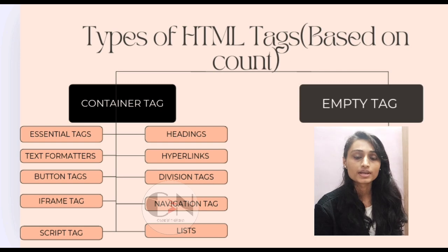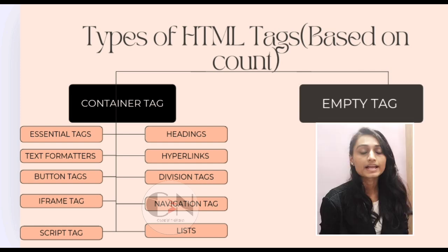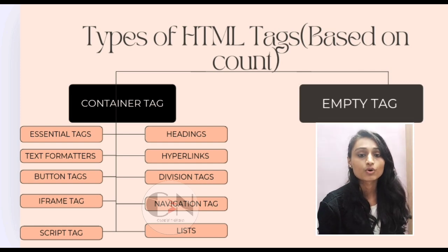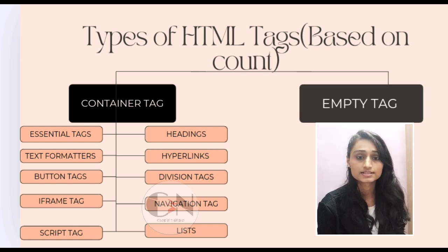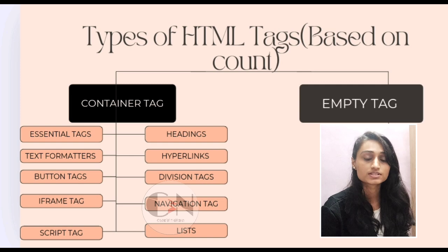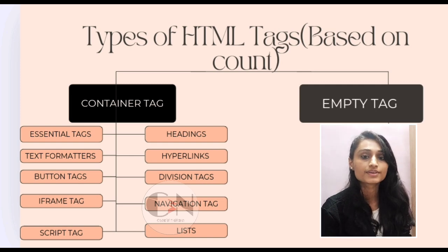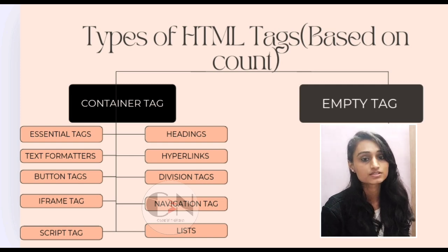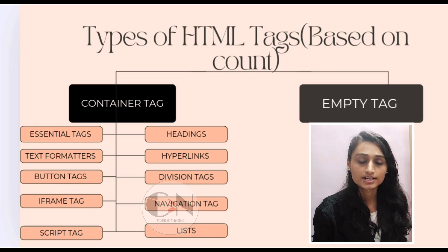When we open a file through a browser, the title will appear on the tab of the browser. The opening and closing body tag displays all other information related to the web page, such as text, images, videos, etc. Another essential container tag is the heading tag. Headings range from h1 to h6 and are used to give headings of different sizes to the web page.